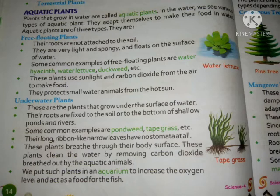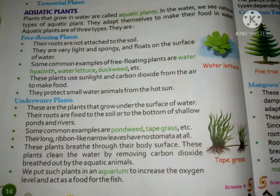Underwater plants are plants that grow under the surface of water. Their roots are fixed to the soil, or to the bottom of shallow ponds and rivers — unlike free-floating plants whose roots are not attached to the soil. Some common examples are pond weed and tapgrass.